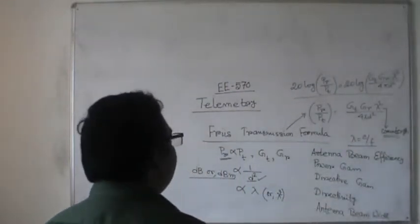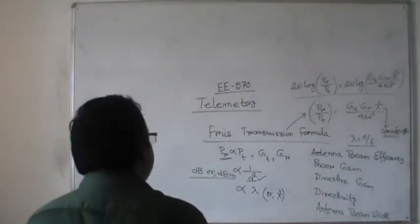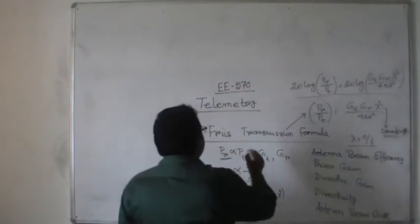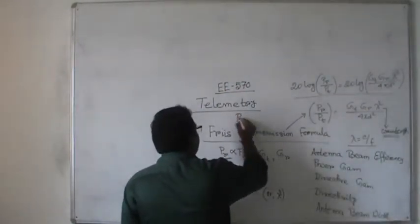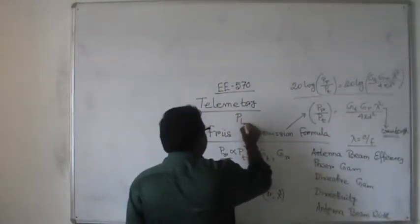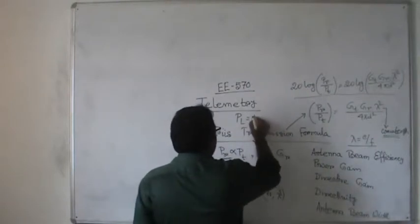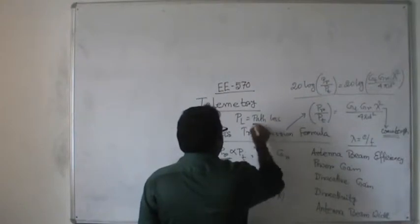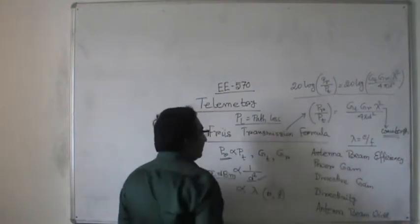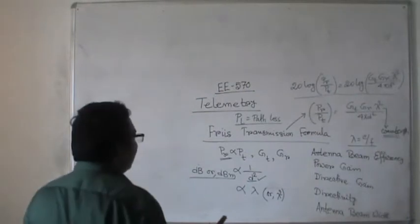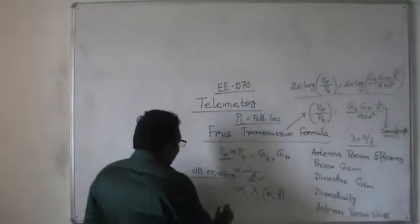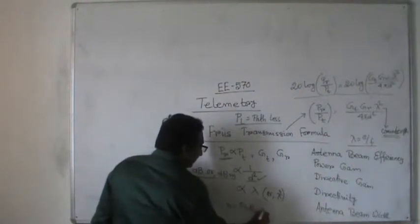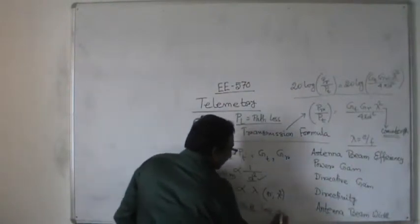Whenever we observe that the exact transmitted power is not received at the receiving end, there is one particular term representing this as PL — that means path loss or power loss. That particular term depends on one more factor defined by small n, which is known as the path loss exponent.